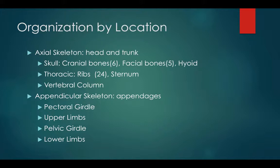Now let's talk about organization by location. We organize bones in two ways: the axial skeleton and the appendicular skeleton. The axial skeleton includes the head and the trunk — the skull bones, which are the cranial bones, facial bones, and the hyoid; the thoracic bones, which are the ribs and the sternum, with the sternum broken down into three parts; and then the vertebral column: seven cervical, twelve thoracic, five lumbar, five fused sacral, and four fused coccyx.